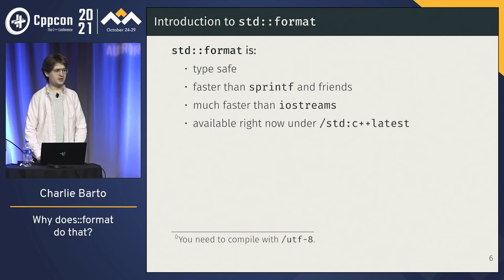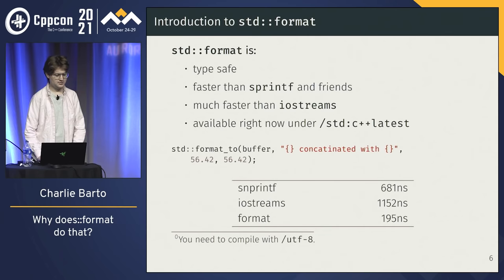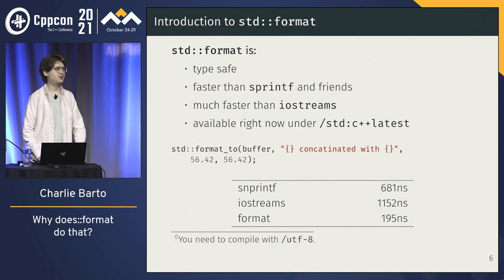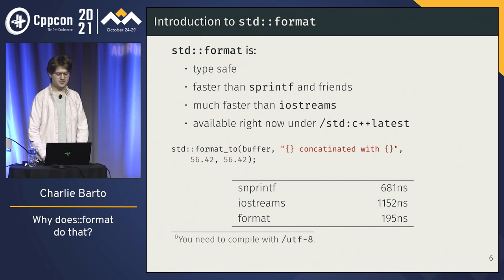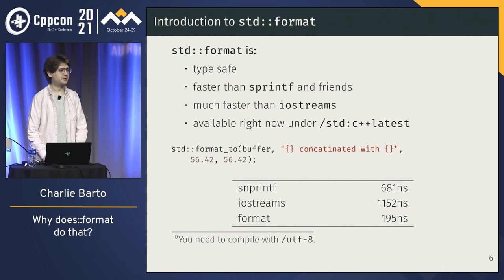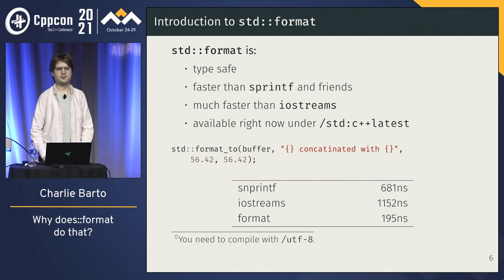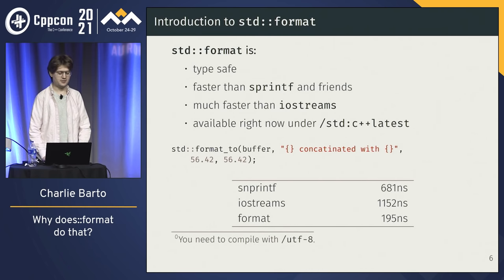std::format is available in MSVC in Visual Studio 2019 and 2022 under /std:c++latest. We're going to talk about the plan to bring it to /std:c++20 at the end of the talk. You can see just how much faster it is than the alternatives — this is against our version of iostreams and the UCRT version of snprintf. It's a lot faster.